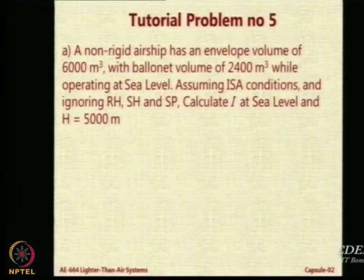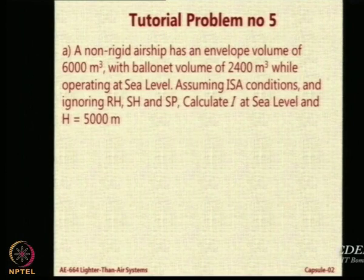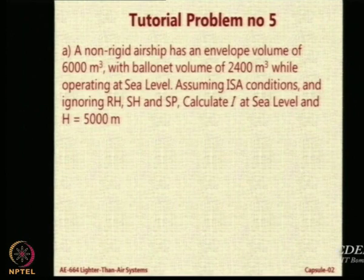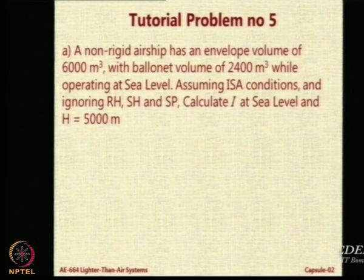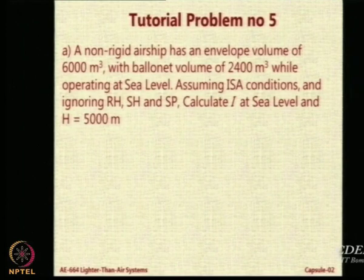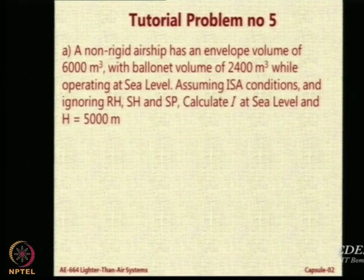Let us see if we have understood this by doing a simple tutorial problem. This problem will run through the whole class for all the examples we see. We assume there is an airship of 6000 cubic meter envelope volume and a ballonet of 2400 cubic meters at sea level condition. We are using sea level conditions and for simplicity we are ignoring relative humidity, meaning E will be 0. We are also ignoring superheat and superpressure.